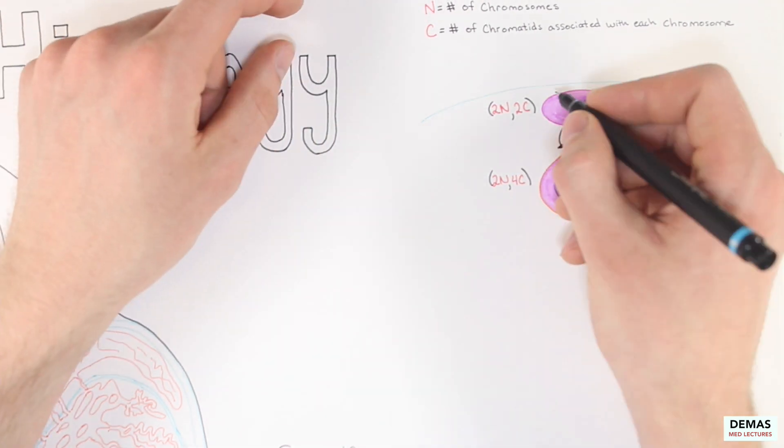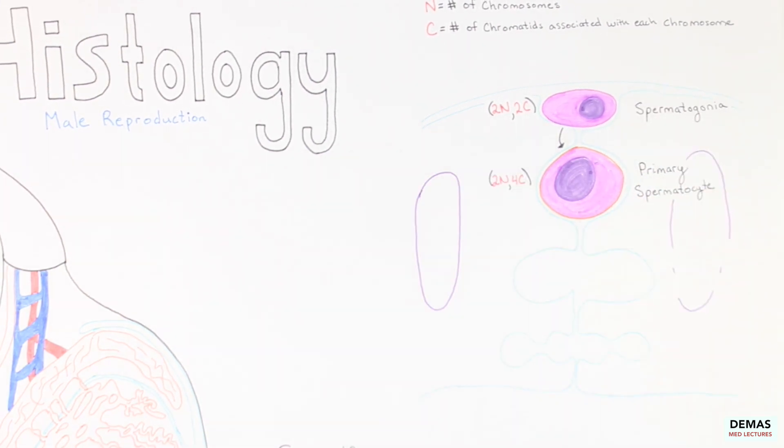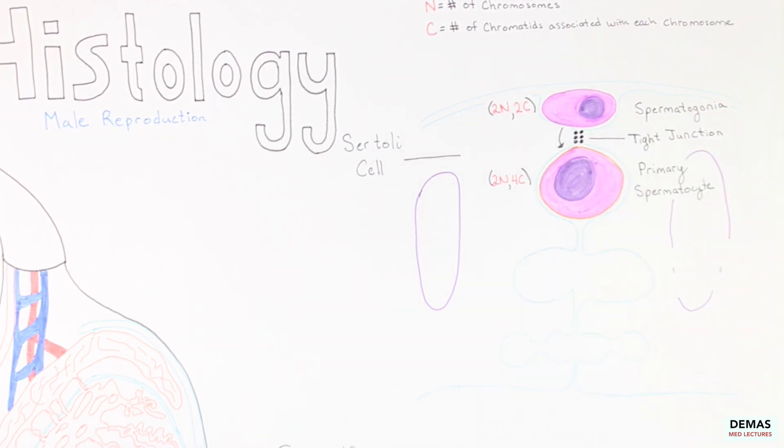Also, as you might notice, the primary spermatocyte is sandwiched between adjacent Sertoli cells and are separated from the exterior of the tube by tight junctions. These tight junctions between Sertoli cells help to form the blood testis barrier. Since gametes form novel haploid genomes, they also can potentially be recognized as foreign by the immune system, and to prevent autodestruction of gametes, the maturing sperm must be completely separated from the rest of the body.